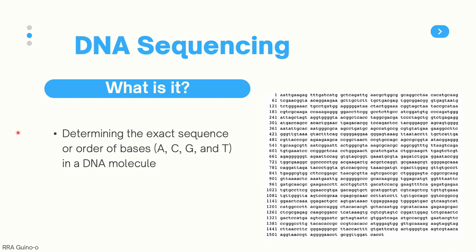As a recap, there are four bases in your DNA: adenine, abbreviated by A; cytosine, abbreviated by C; guanine, abbreviated by G; and thymine, abbreviated by T. In this example, you can see the sequence of the 16S rRNA gene in E. coli, and you can see there are about 1,500 base pairs.